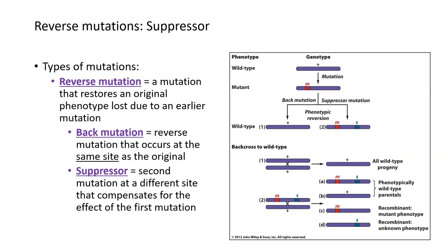There's also a situation called a suppressor, where there's an additional mutation not at the same exact site — not just going back to normal — but one that can actually reverse or compensate for the effect of the first mutation. Here we have a wild type gene on the top that was mutated with a forward mutation and no longer works. If the mutation in red goes back to exactly the way it was before, that's known as a back mutation — going back exactly the same as it was before.